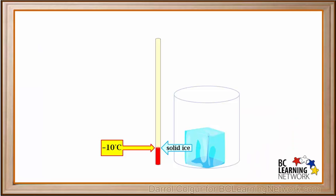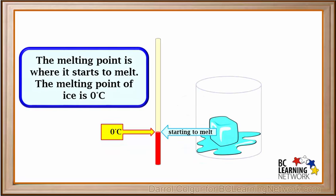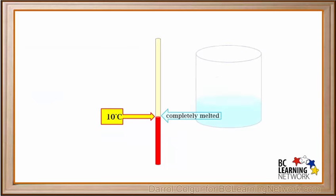Let's say we have some solid ice at minus 10 degrees Celsius. When it's warmed up to zero degrees, the ice will start to melt. So the melting point is the temperature where a solid starts to melt when it's warmed up. Zero degrees Celsius is the melting point of ice, or solid water. If we keep on adding heat and the temperature goes above the melting point, say to plus 10 degrees Celsius, the ice will completely melt when given time.